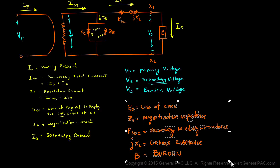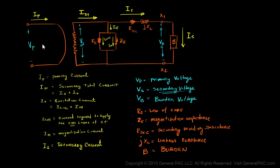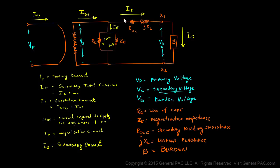We've now explained all of the values associated with modeling a current transformer. We looked at the primary current, the primary voltage, the secondary voltage measured across the magnetization branch, the total secondary current equal to the exciting current plus the secondary current going through the burden. We looked at RC representing core losses, ZE the magnetization impedance, R-secondary the secondary winding resistance, JXL the leakage reactance, and the burden.